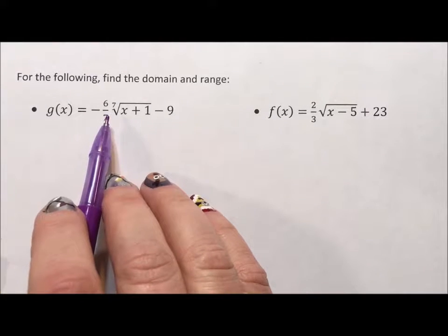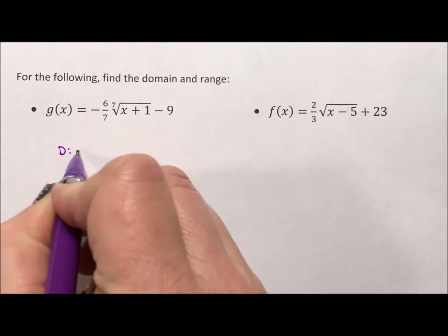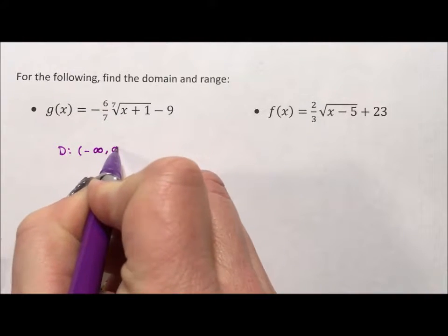So, odd-rooted radicals are oddly simple because the domain and range are just all real.